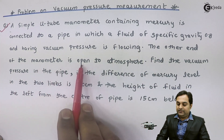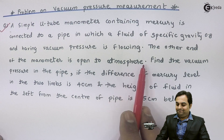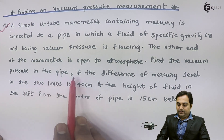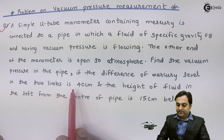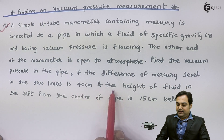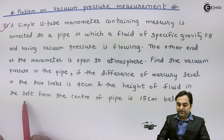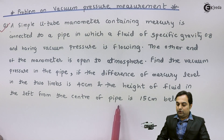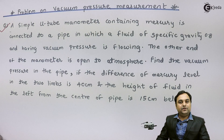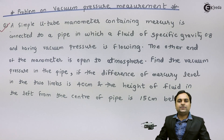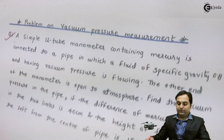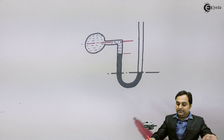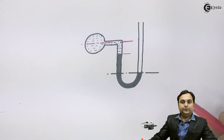The other end of the manometer is open to atmosphere. Find the vacuum pressure in the pipe if the difference of mercury level in the two limbs is 40 centimeters and the height of fluid in the left limb from the center of the pipe is 15 centimeters below. I have drawn a diagram here indicating the U-tube manometer for vacuum pressure measurement.